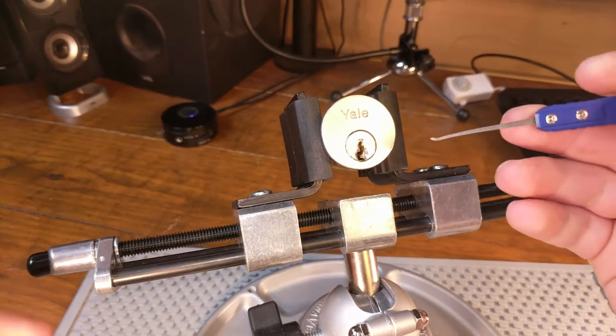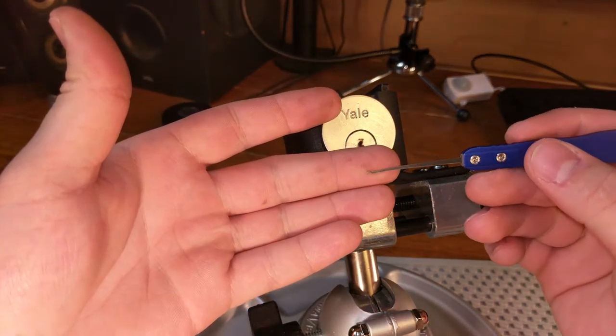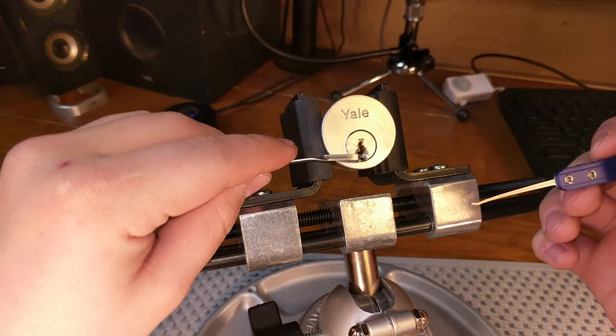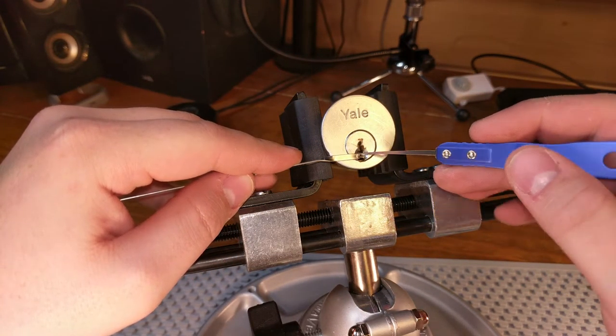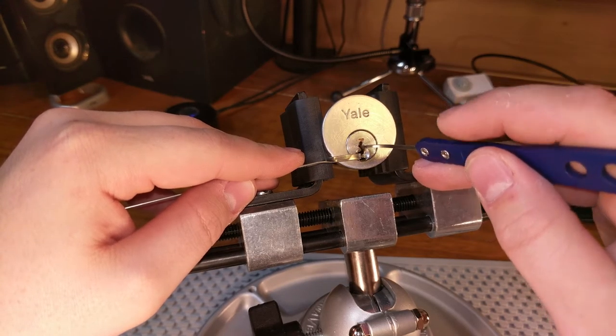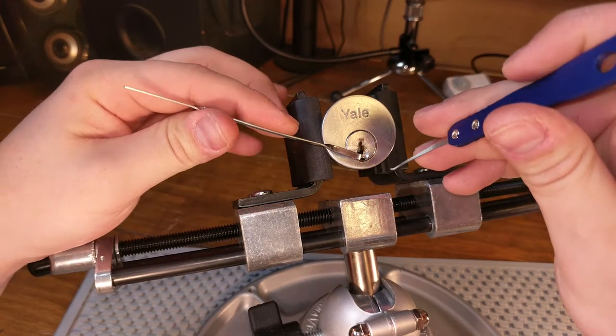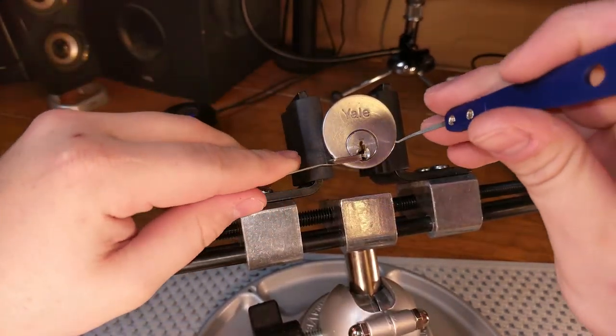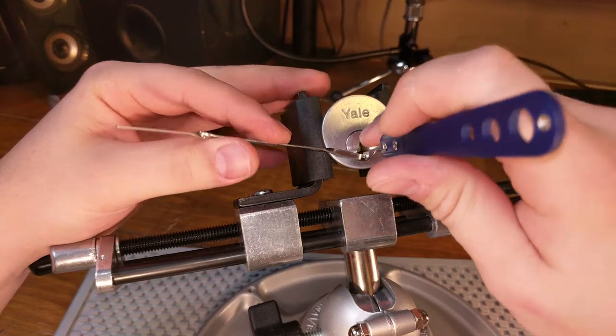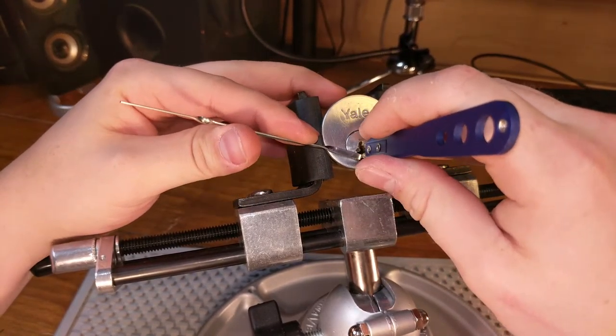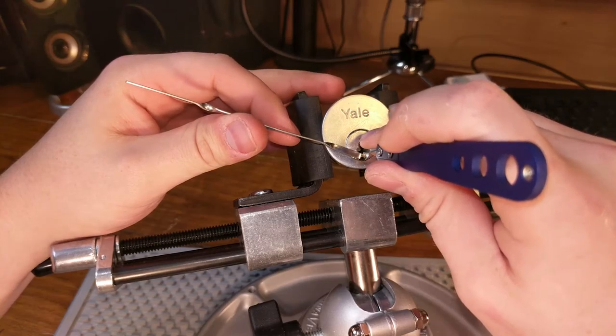All right I'm gonna use my Dyno short hook and this tension wrench and use the bottom of the keyway because if you can't tell the top goes up, hooks quick 90 to the left and it goes up at an angle. Really hard to get anything in the top of the keyway and it is locked as you can see there. I don't have a key for it, so here we go.